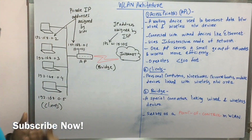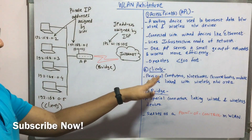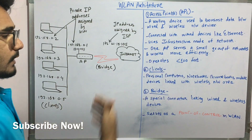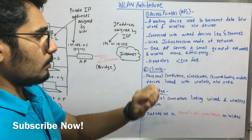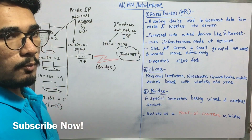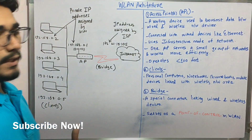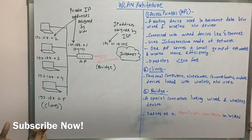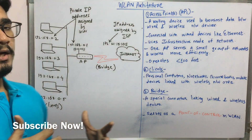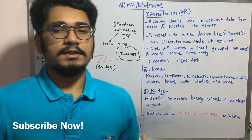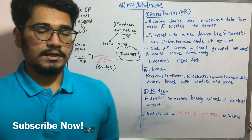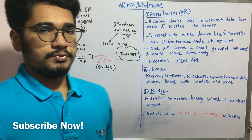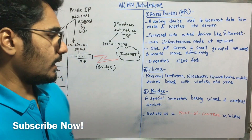Next, you have the clients. Clients could be anything — it can be a personal computer, or it can be a notebook, or it can be Chromebooks, or a mobile device, or even laptops which are linked with the wireless network area. So it's just a collaboration of different wireless devices which you use to do your data transfer.